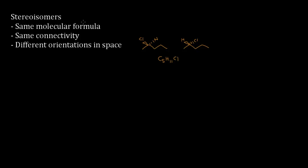Next we have to look at the connectivity. Notice how all these are single bonds, and notice how the chlorine and this specific hydrogen are both connected to carbon 2 — labeling the carbons 1, 2, 3, 4, 5. The chlorine and hydrogen are both attached to carbon number 2 in both structures, so they do indeed have the same connectivity.